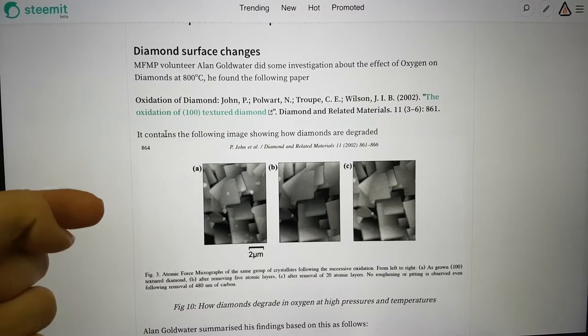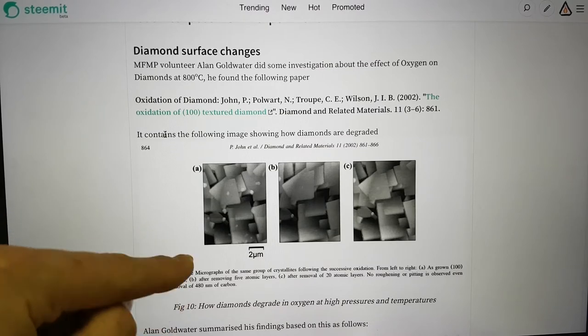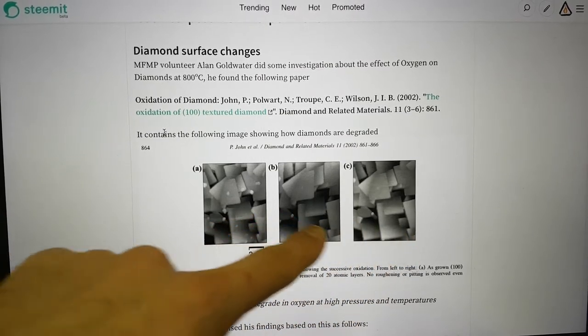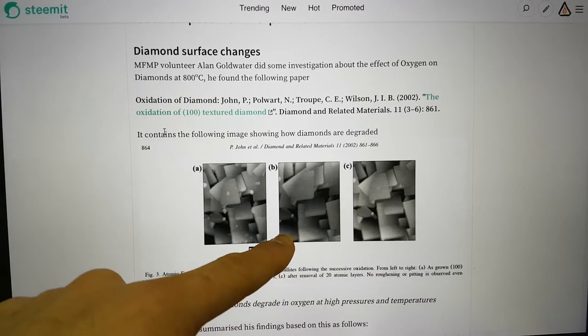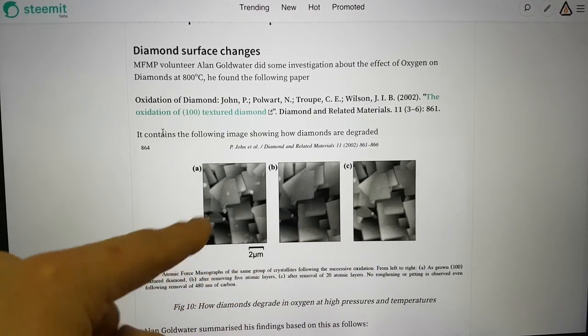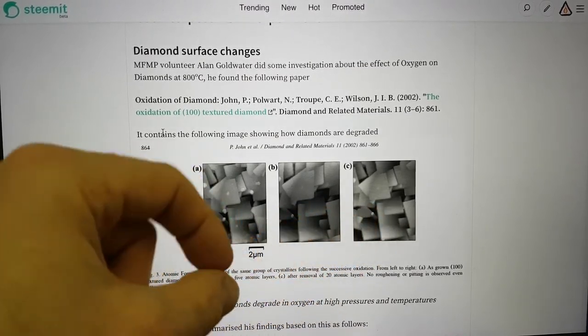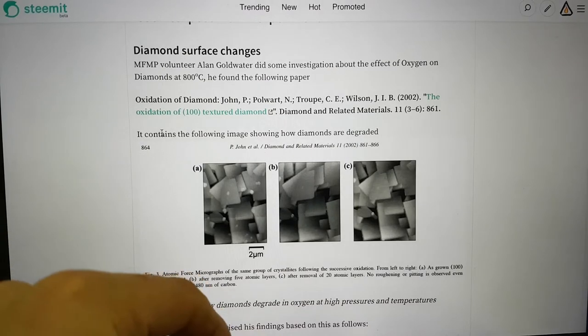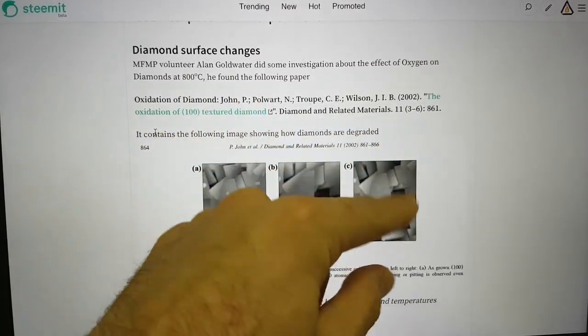This is three different stages where they have, these are as grown, and this is after oxidation at high pressure and temperatures. Essentially what happens is the diamond doesn't really change its overall shape, it just loses mass from all sides in equivalent ratio.